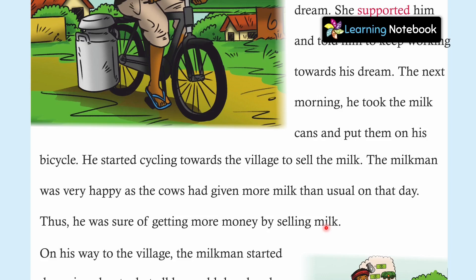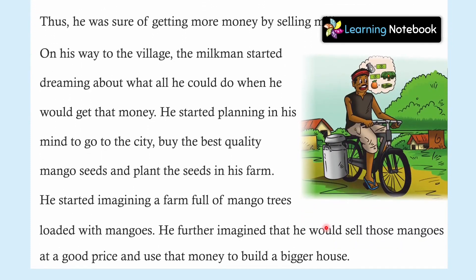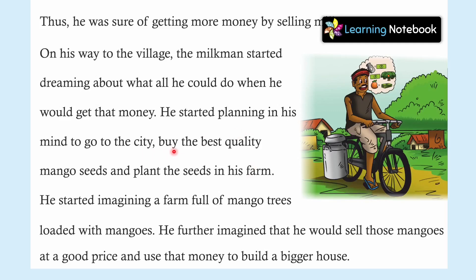On his way to the village, the milkman started dreaming about what all he could do when he would get that money. He started planning in his mind to go to the city, buy the best quality mango seeds and plant the seeds in his farm. यही चीज़ यहां लिखी है — उसको यकीन था कि आज उसको ज़्यादा पैसे मिलेंगे, तो उसने सोचा कि city जाकर best quality के mango seeds लाकर अपने farm में plant करेगा।